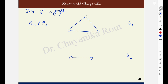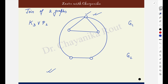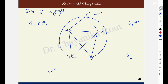How to get the join? I will make every vertex of G1 adjacent to every vertex of G2. This is a vertex of G1 — I will make it adjacent to every vertex of G2. This is another vertex of G1, so I will make it adjacent to every vertex of G2. This is another vertex of G1 — I will make it again adjacent to every vertex of G2. Every vertex of G1 has been made adjacent to every vertex of G2, and that is how we get the join of two graphs.